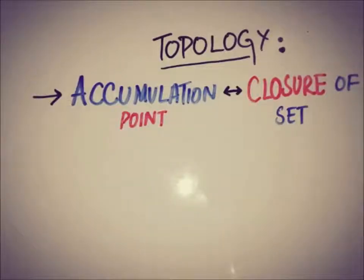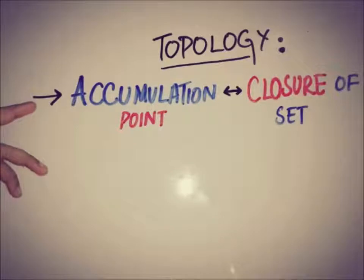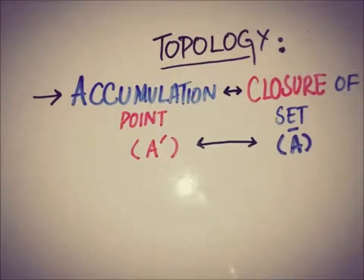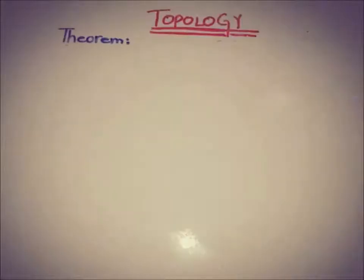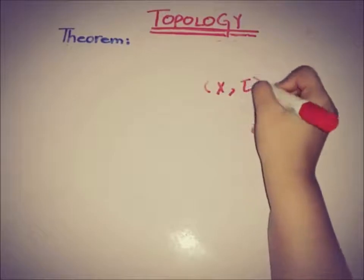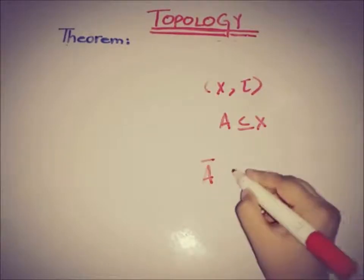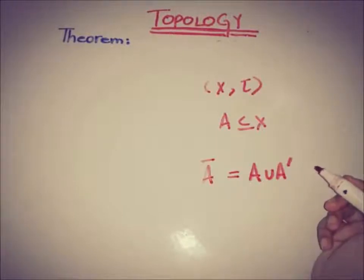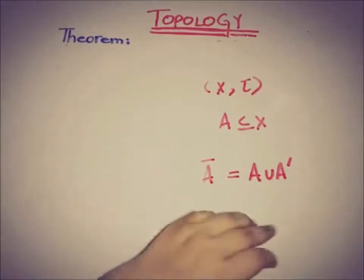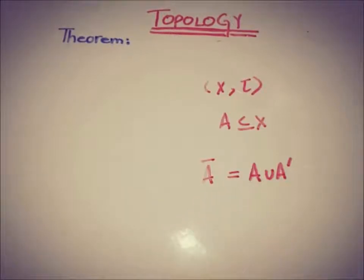Hello everyone, this is Di from meacademy. This video overlaps the two main topics of the closure of a set and the limit or accumulation point. That is, what is the relation between A-prime and A-bar. We can understand the relation between the closure of a set and the accumulation point by a simple statement of the theorem. If (X, τ) is a topological space and A is a subset of X, then the theorem states that A-bar is equal to A union A-prime. That is, the closure of a set is equal to the union of the set A and the accumulation set of A.